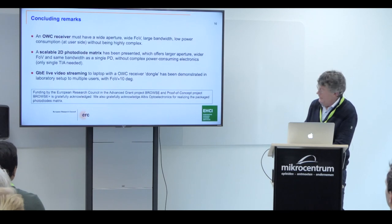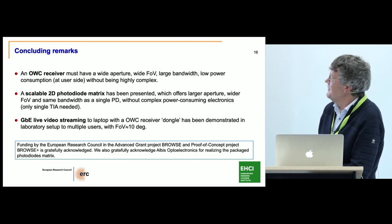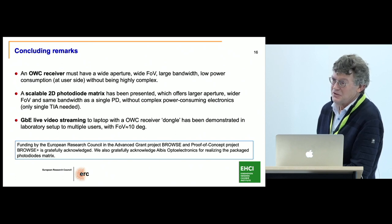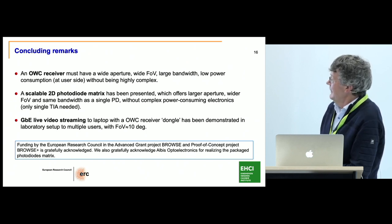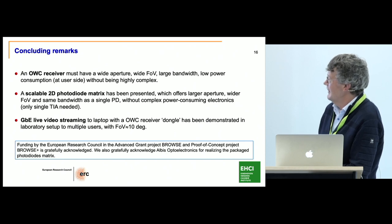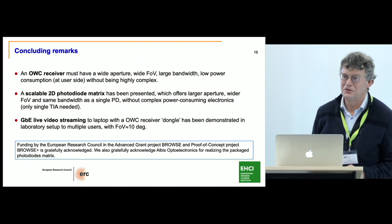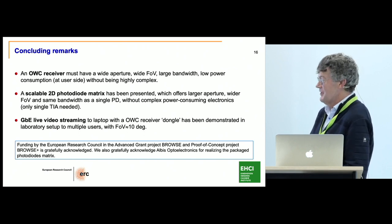That brings me to my final slide. We have shown that an optical wireless communication receiver can be built with this concept, meeting the requirements of high aperture, wide field of view, large bandwidth, and low power consumption — because we need only one TIA at the receiver site. The novel concept of the scalable two-dimensional photodiode array: we built it with a 4×4 matrix, but theoretically you can expand it to any size — people in Japan have shown 10×10 for this concept. We also showed this is applicable for live video Gigabit Ethernet streaming, where the system acts as a kind of receiver dongle. Acknowledgements to the European Research Council and Albis Optoelectronics for providing us with the photodiode matrix according to our design.